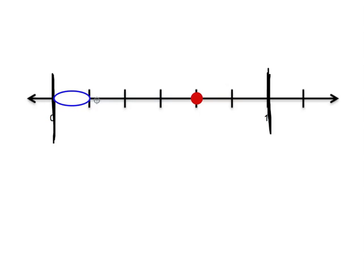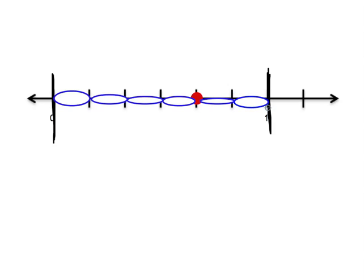Within this number line, I can see that there are one, two, three, four, five, six pieces total from zero to one. I care that there are six pieces because I know that the denominator — the bottom number of my fraction — is the number of total pieces in one whole.